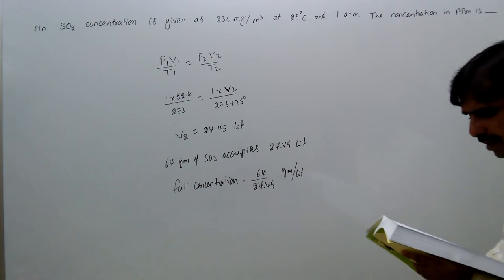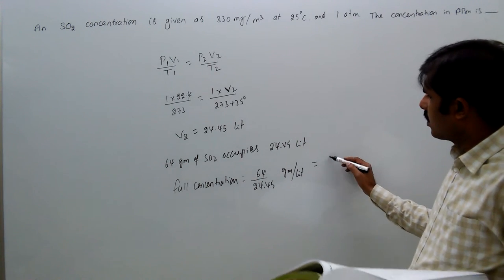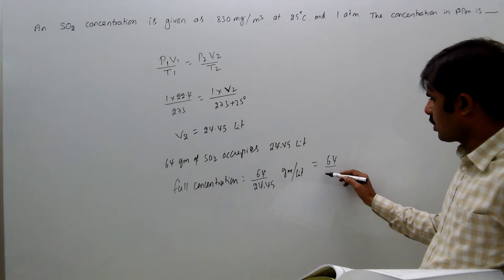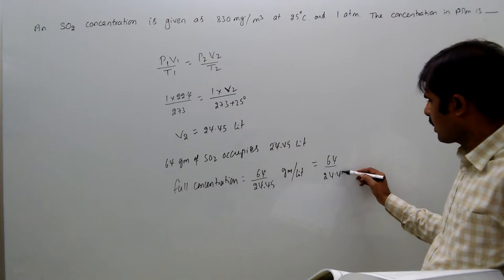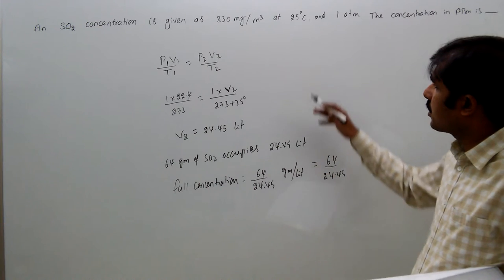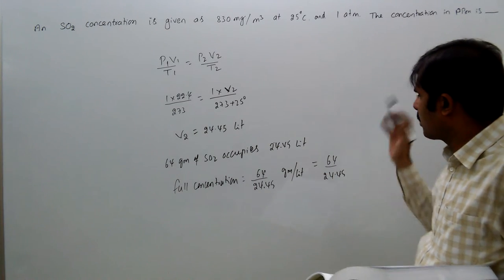Grams per liter, that equal to 64 by 24.45. We need to convert this gram per liter into mg per meter cube.